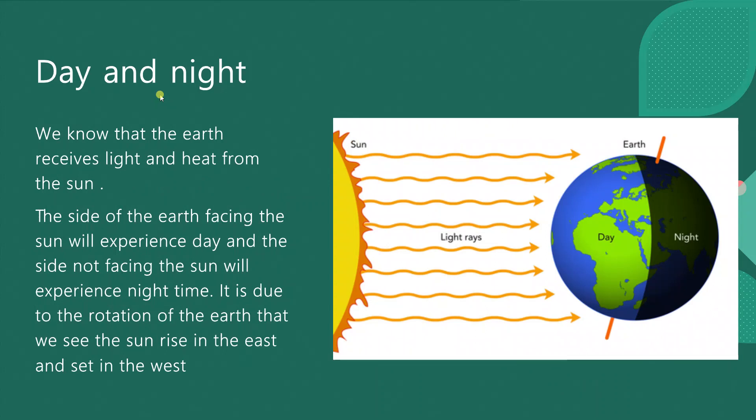Day and night: We know that the earth receives light and heat from the sun. The side of the earth facing the sun will experience day and the side not facing the sun will experience nighttime. It is due to the rotation of the earth that we see the sun rise in the east and set in the west.